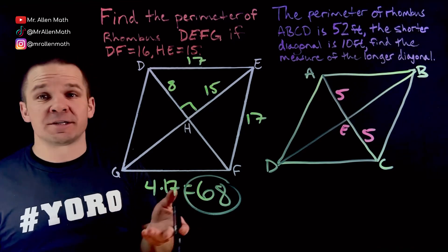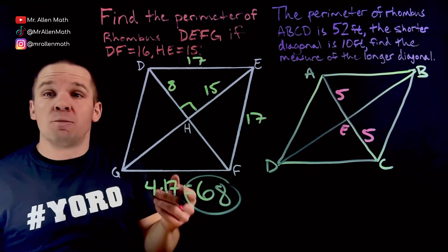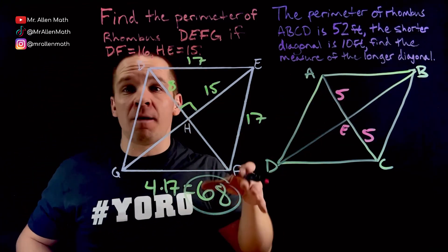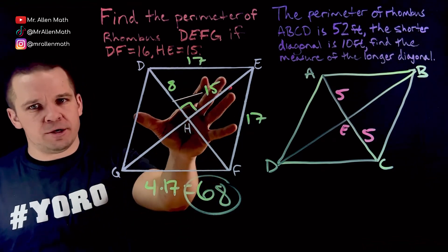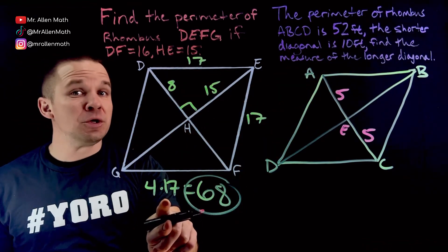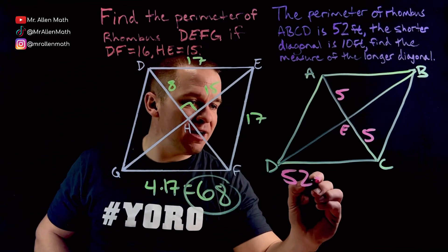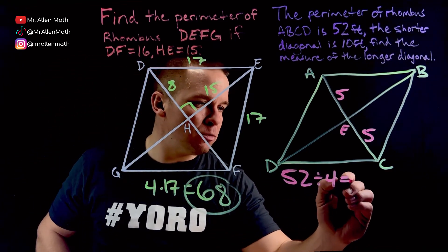They still bisect each other just like a parallelogram. A rhombus takes all the properties of a parallelogram, which is super dope, right? But also all my sides are congruent, which we already used here. 52. Could I do that? But like the opposite. Ooh, 52 divided by four, that's going to equal 13.